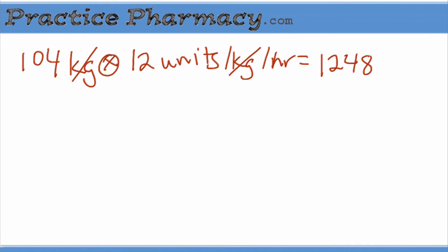So for our 104 kilogram patient, the order says 12 units per kilogram per hour, which comes out to 1,248, and the units of kilograms cancel. We're going to pause at units per hour, compare that to the maximum infusion rate to start with on the protocol, which was 1,000 units per hour.